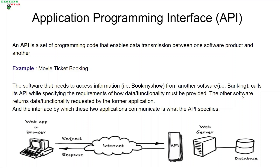If your payment is successful, your ticket will be booked. If the payment is not successful, then your ticket will not be booked. So how exactly is this happening? This is where APIs come in. Basically, there is a programming code for an API written which is governing all this communication between BookMyShow and the banking servers or banking applications.